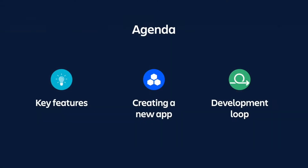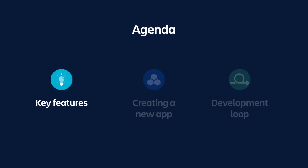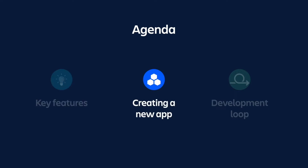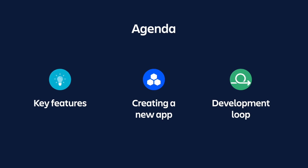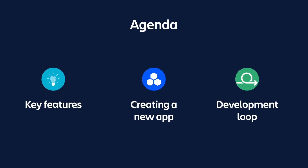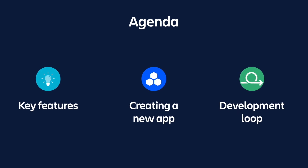Before we go too far, let's take a look at the agenda for this episode. We're going to start by outlining the key features of Forge and why you would choose it to develop apps. We'll then walk you through the process of creating an app, assuming this is the first time you've built with Forge but that you're not a complete novice to app development. We'll then explain the development loop so you can make improvements iteratively and efficiently. We'll be sharing code throughout this episode, but you don't need to pause to copy it because we've open-sourced it and we'll share a link at the end.